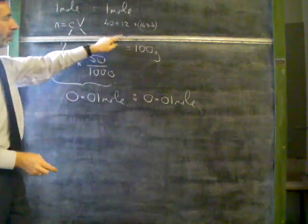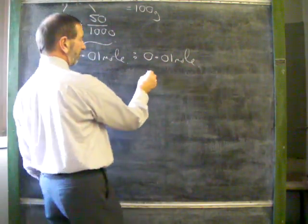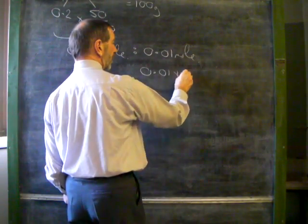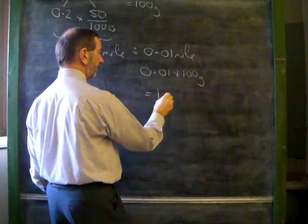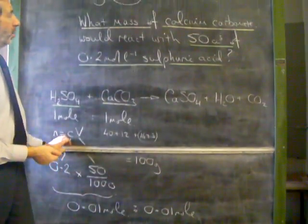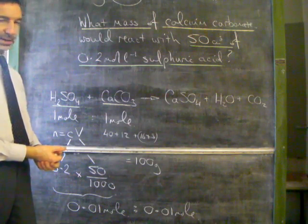So if one mole is 100 grams, and we only require 0.01 of a mole, then we simply multiply 0.01 times 100 grams, giving an answer of one gram. One gram of calcium carbonate would react with 50 cubic centimeters of 0.2 moles per liter sulfuric acid.